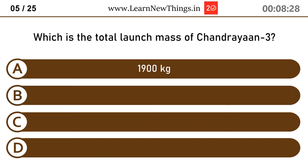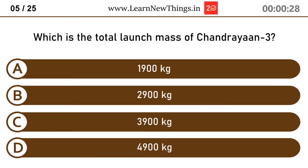Which is the total launch mass of Chandrayaan 3? 3,900 kilograms.